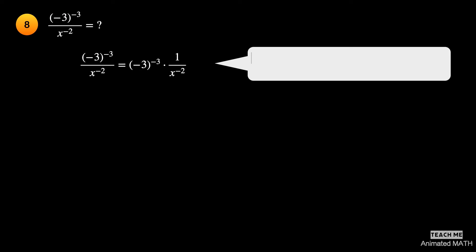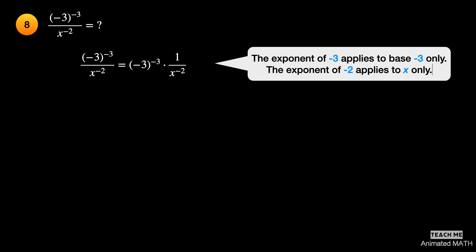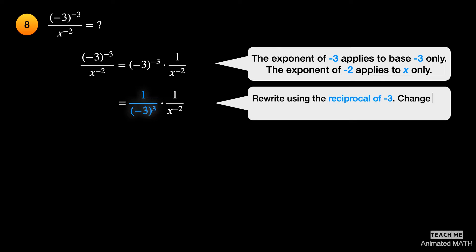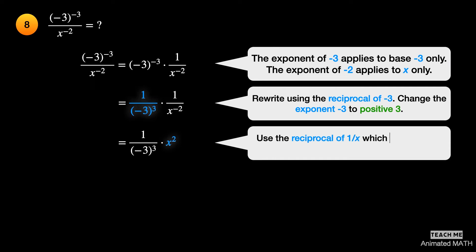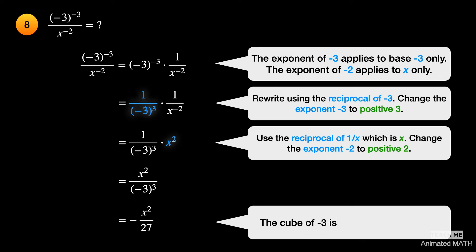The exponent of negative 3 applies to negative 3 only, and the exponent of negative 2 applies to x only. Rewrite negative 3 to the negative 3rd power using the reciprocal of negative 3 and change the exponent to positive 3. Simply put x in the numerator and change the exponent to positive 2. The cube of negative 3 is negative 27. The final answer is negative x squared over 27.